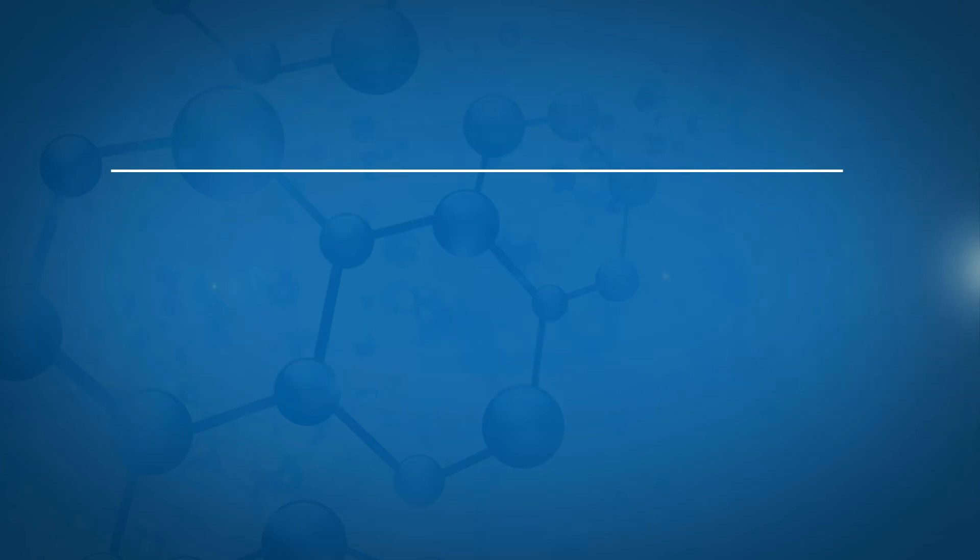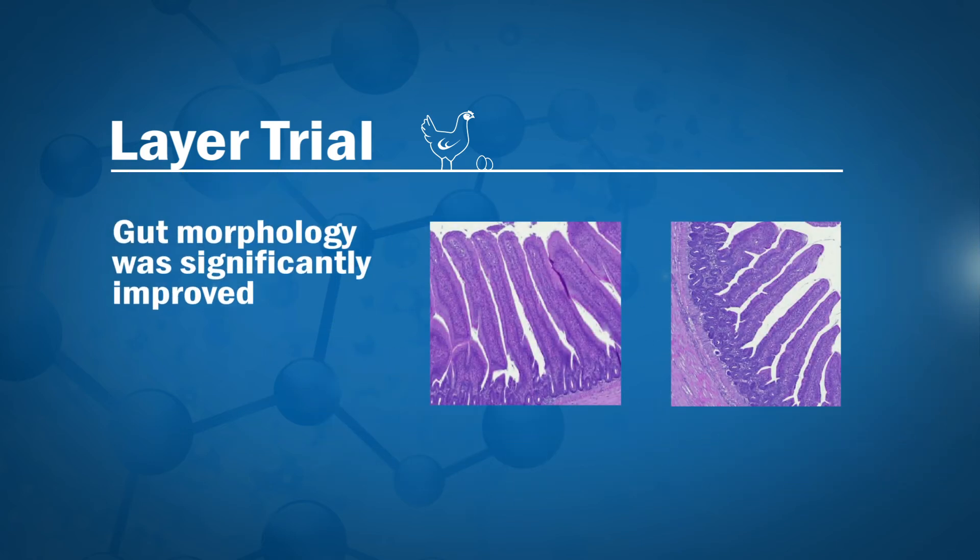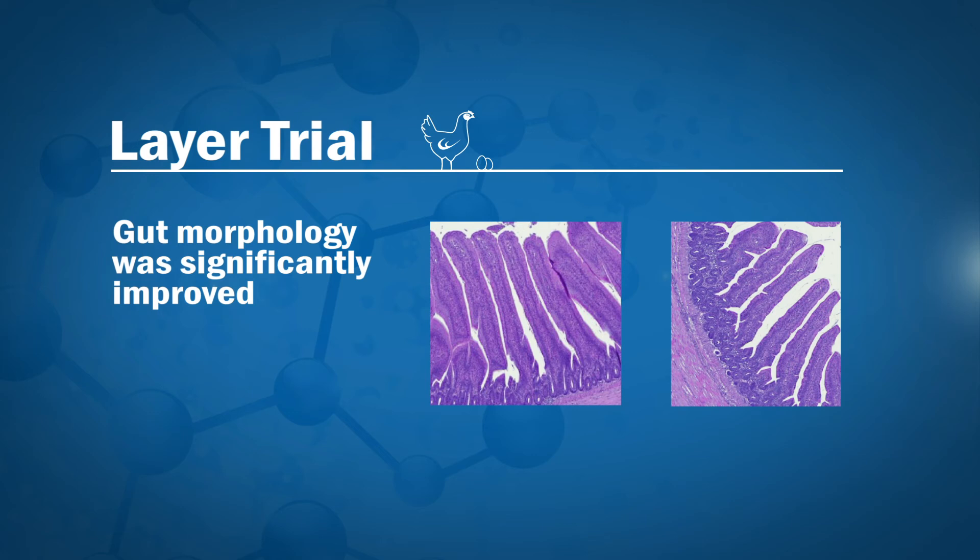A trial to determine if the addition of Natupro or Natupro plus prebiotic can improve egg production performance, gut morphology, and egg quality of layer hens in an antibiotic-free production system showed that gut morphology was significantly improved by the inclusion of Natupro into the diet. This indicates an improvement in nutrient digestibility. There was also a 4% improvement in egg production when Natupro was included.